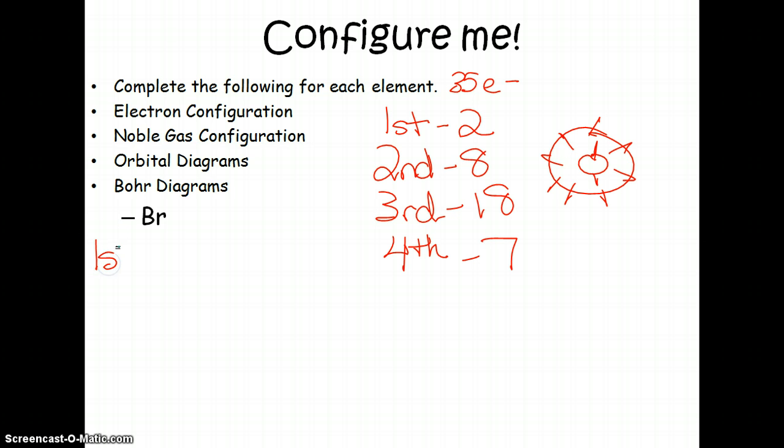Electron configuration. You always start with 1s. So it's 1s2, 2s2, 2p6, 3s2, 3p6, 4s2, 3d10, and then we end on 4p5.